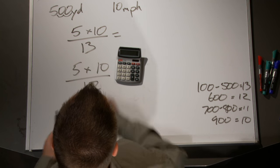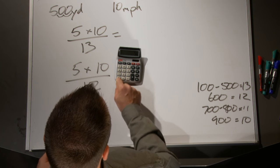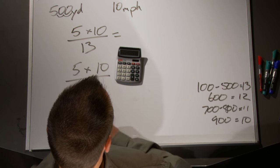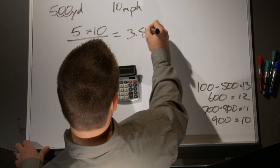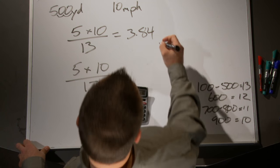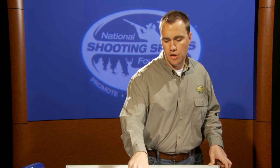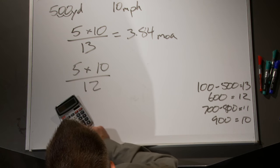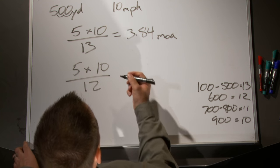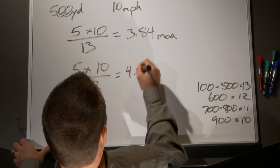With the constant of 12: 5 times 10 is 50, divided by 12, gives me 4.16 minutes of angle. So using the correct constant of 13, the wind shifts the bullet 3.84 MOA; using my constant of 12, it's 4.16 MOA. That's a change — but let's figure out what these minutes of angle are actually going to be in inches at that distance.